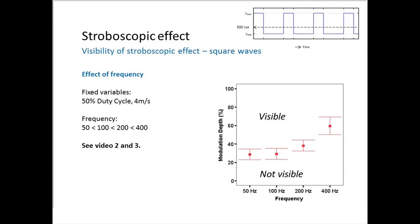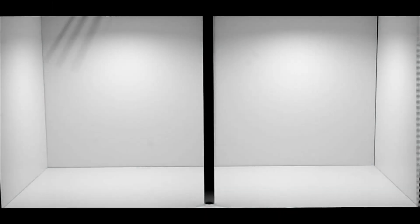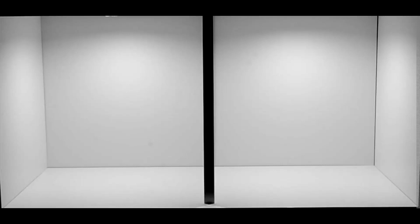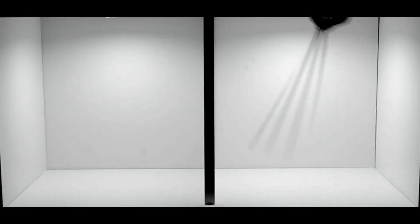Does it depend on frequency? It does. Looking at thresholds per frequency, the visibility threshold goes higher with frequency, meaning we are less sensitive to higher frequencies. The stroboscopic effect at different frequencies also looks different: faster modulation translates into smaller distance between multiple images of the chopstick. It also depends on modulation depth — at 100 Hz, a modulation depth of 100 percent is clearly visible, while 25 percent is not visible at all.